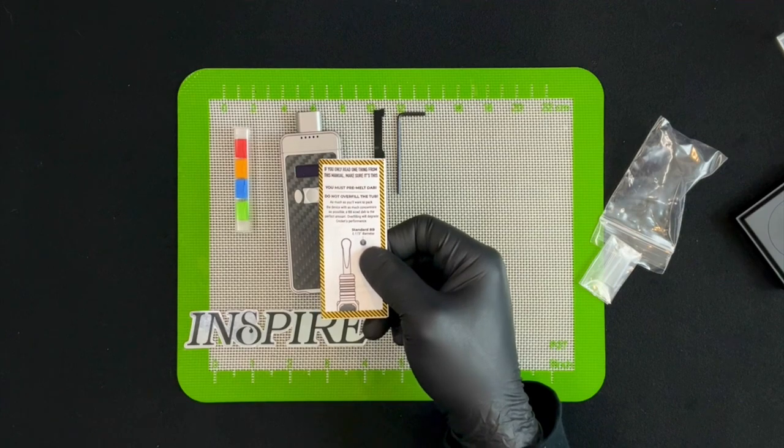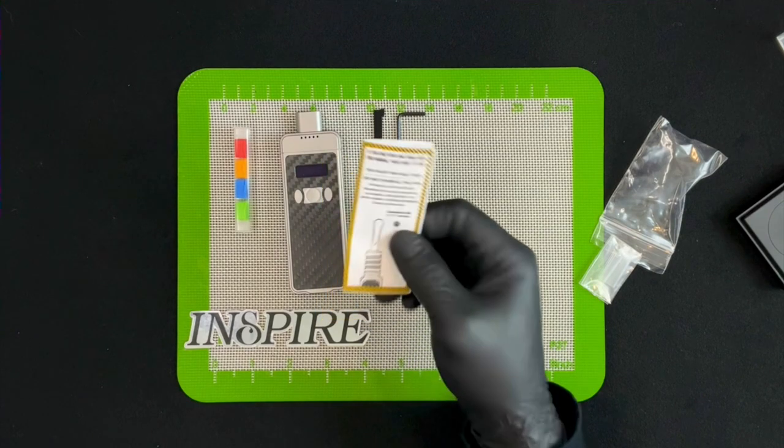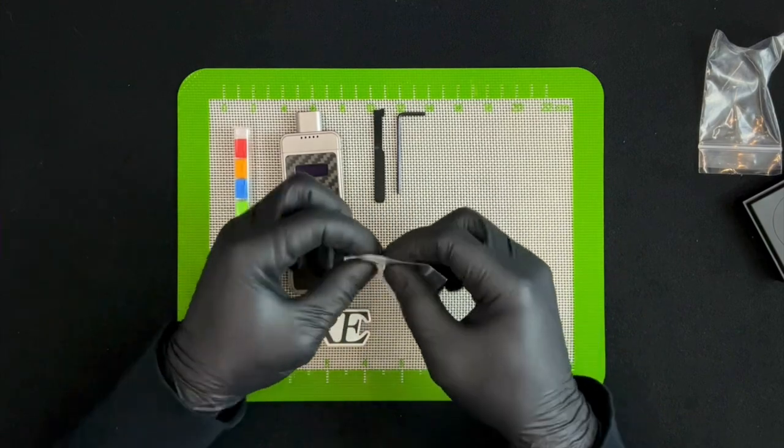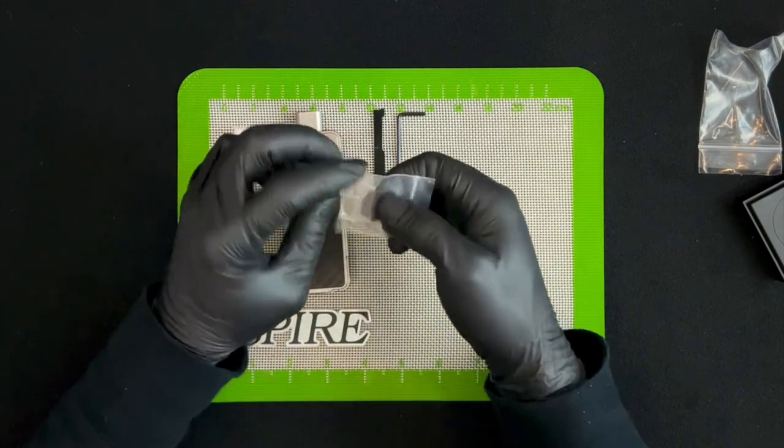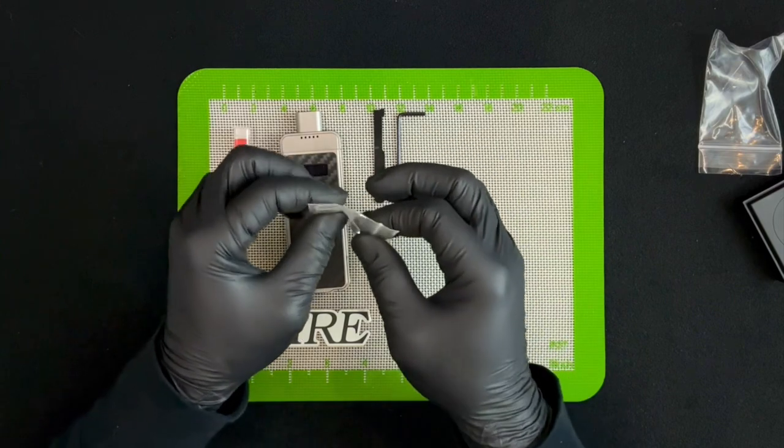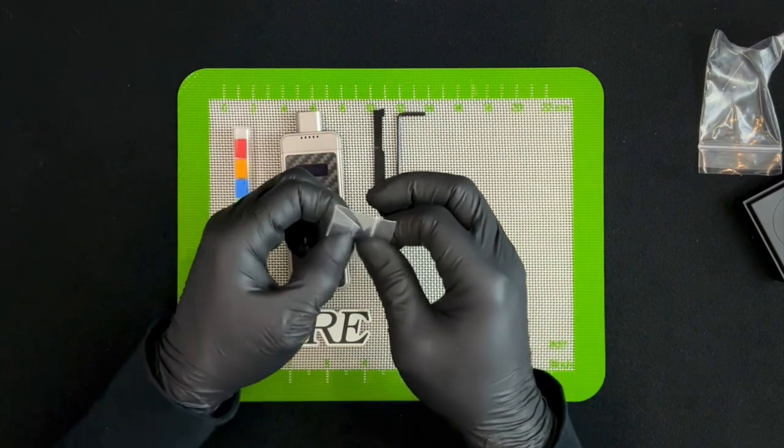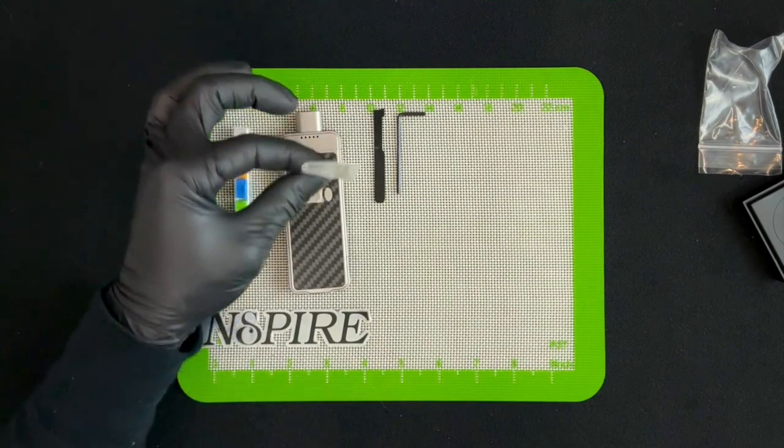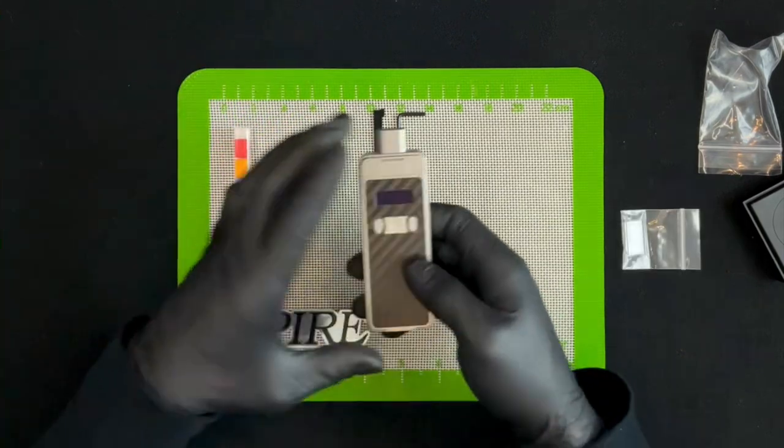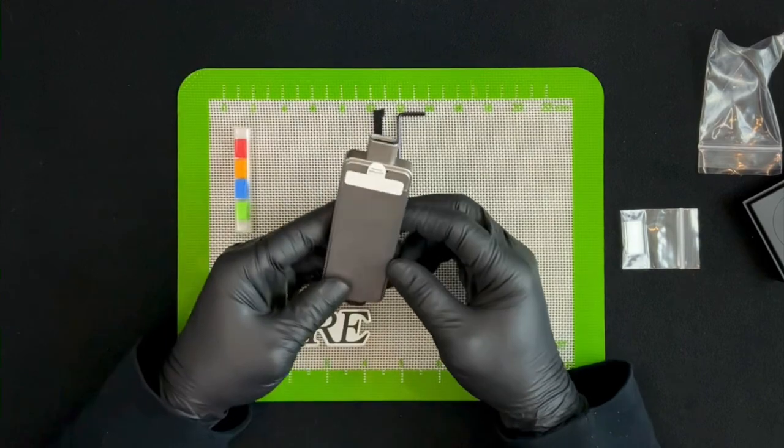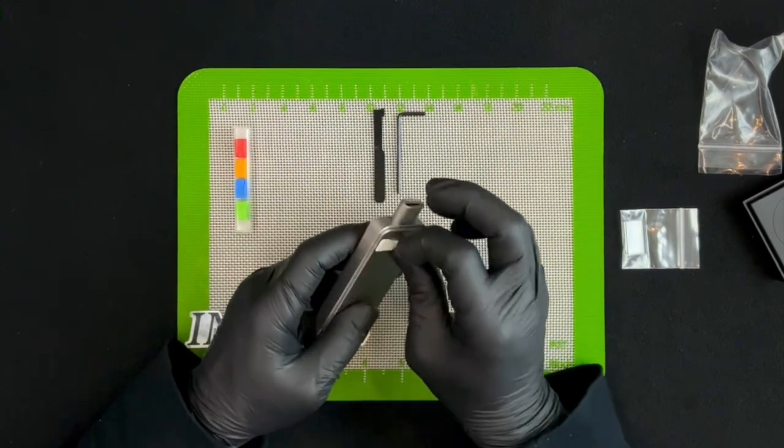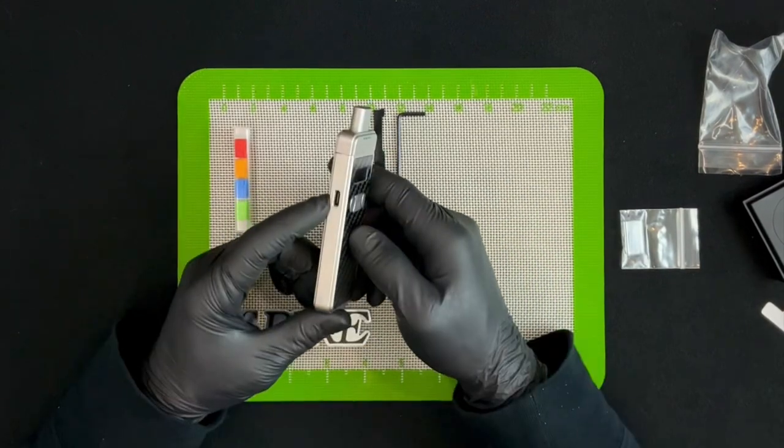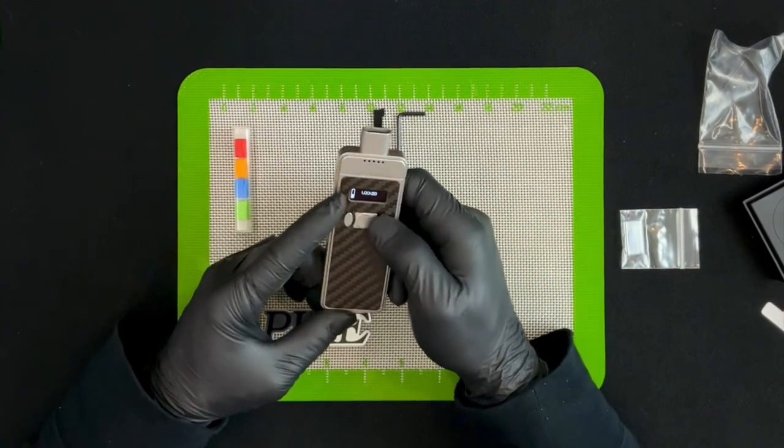Also in the bag we have a glass mouthpiece. That's nice that they give you an extra. For a premium device I really do expect stuff like that, so it is good to see that they give you a glass mouthpiece. Now onto the device. Wow dude, this thing is really weighty. I like how heavy this device is. USB-C, it's got some nice tactile buttons on there.